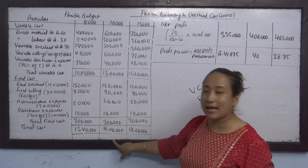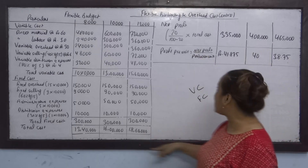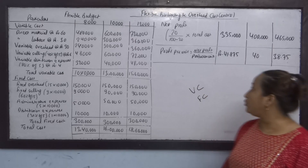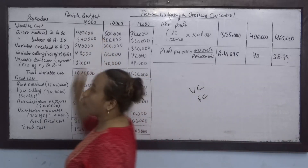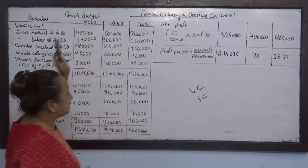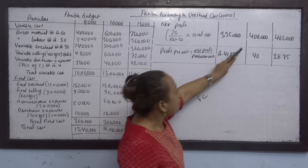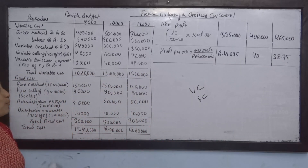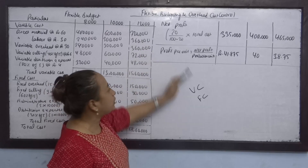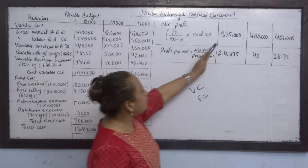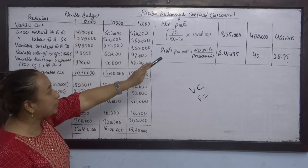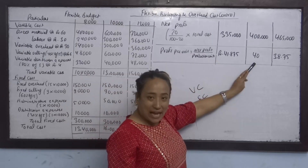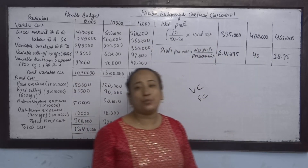The profit calculation is 20 by 80 into total cost in lakhs, which gives 4 lakhs. Profit per unit means profit divided by production units. For 3 lakhs cost with 8,000 units it is divided by 8,000 giving 41.875. For 4 lakhs with 10,000 units, profit per unit equals 40 lakhs divided by the respective units.